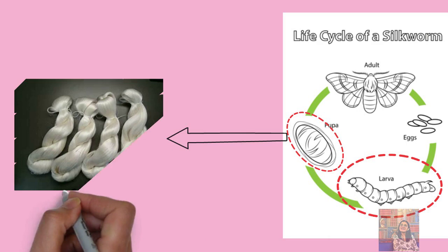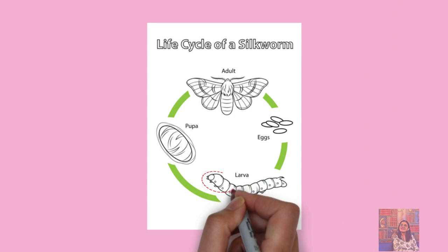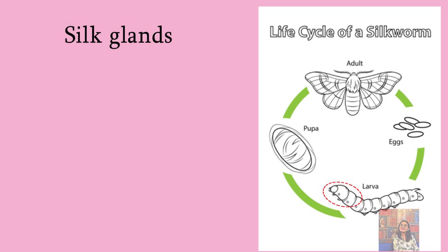This caterpillar has a structure in the thoracic cavity which is called the silk gland. If I talk about human beings, we have a salivary gland that secretes saliva. In the same way, Bombyx mori, which is the silkworm, has a modified salivary gland that produces silk — we call it the silk gland.